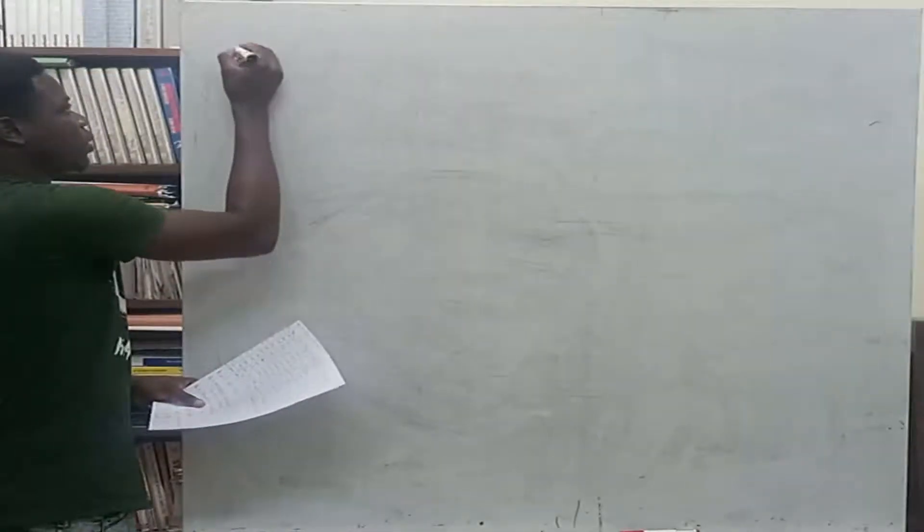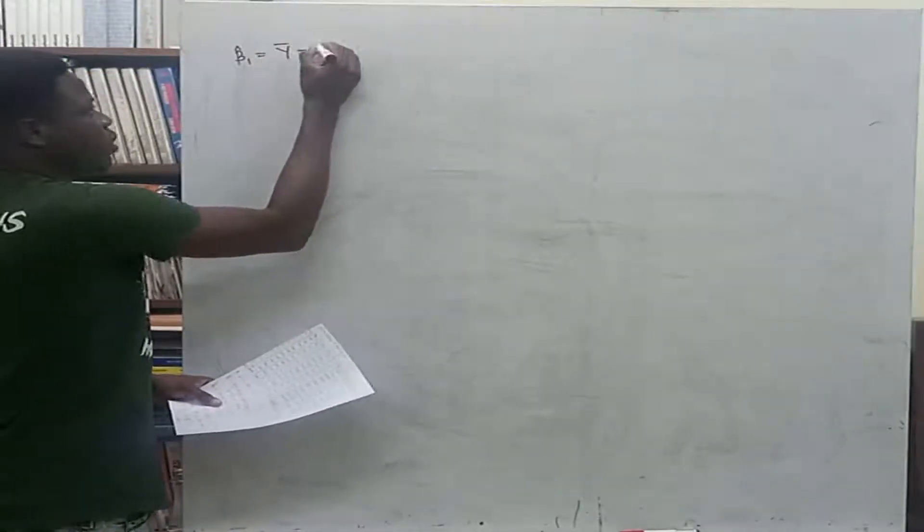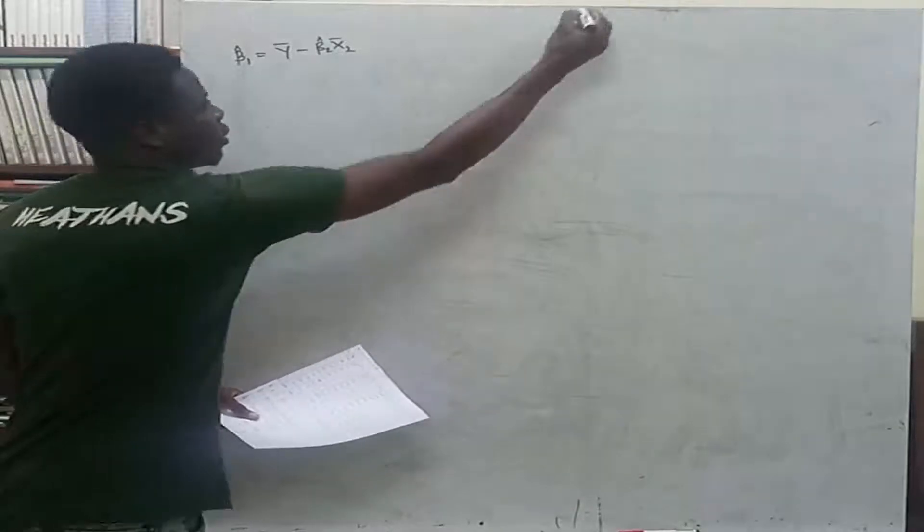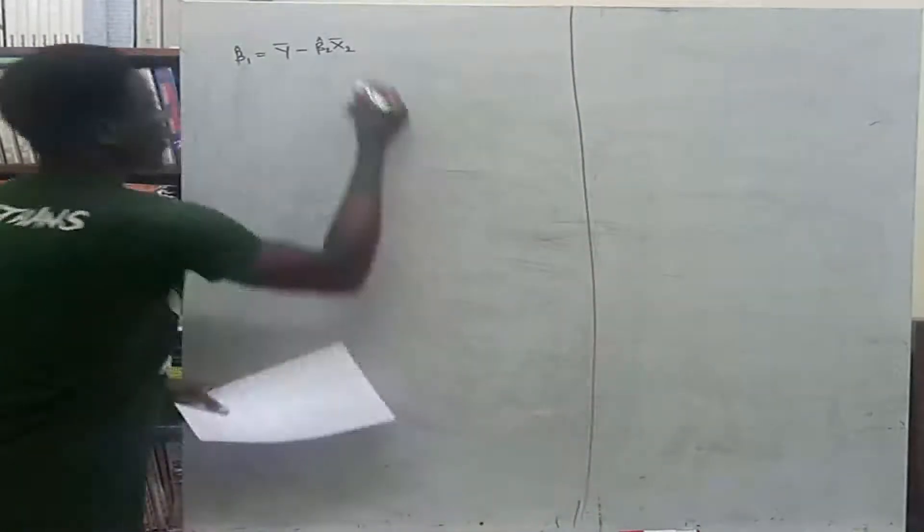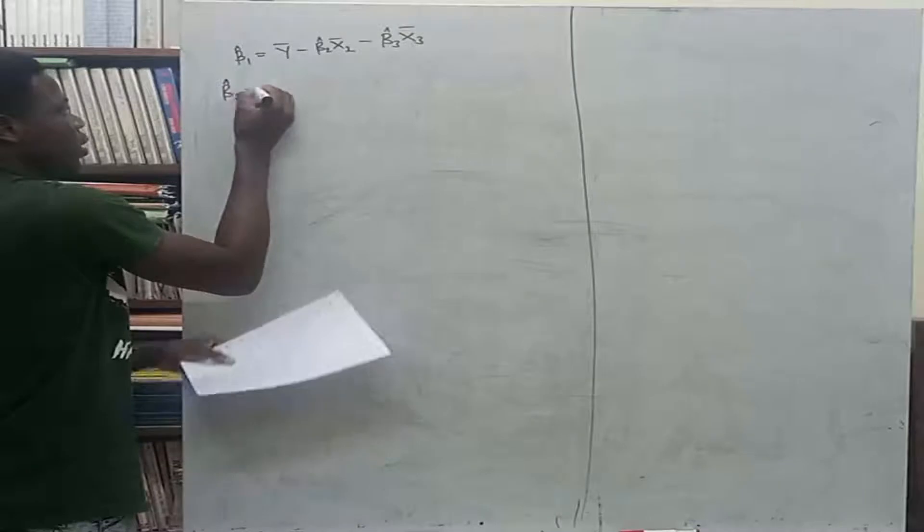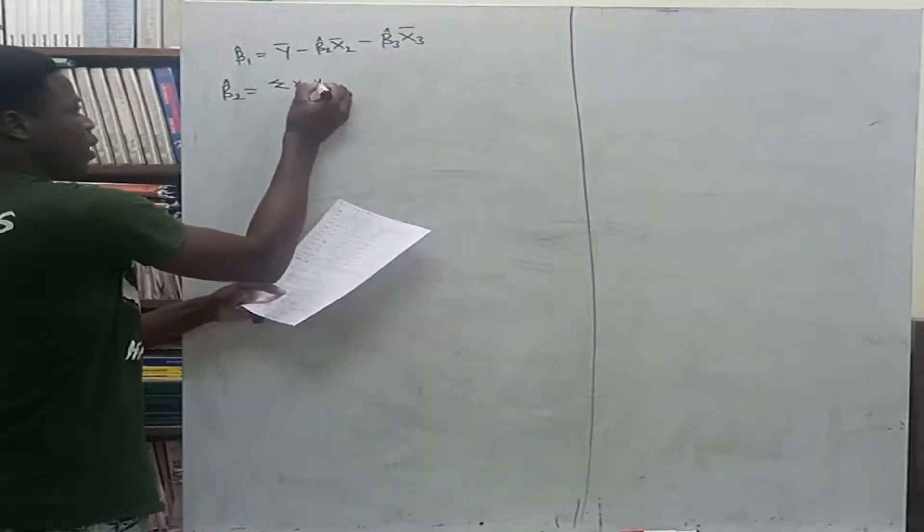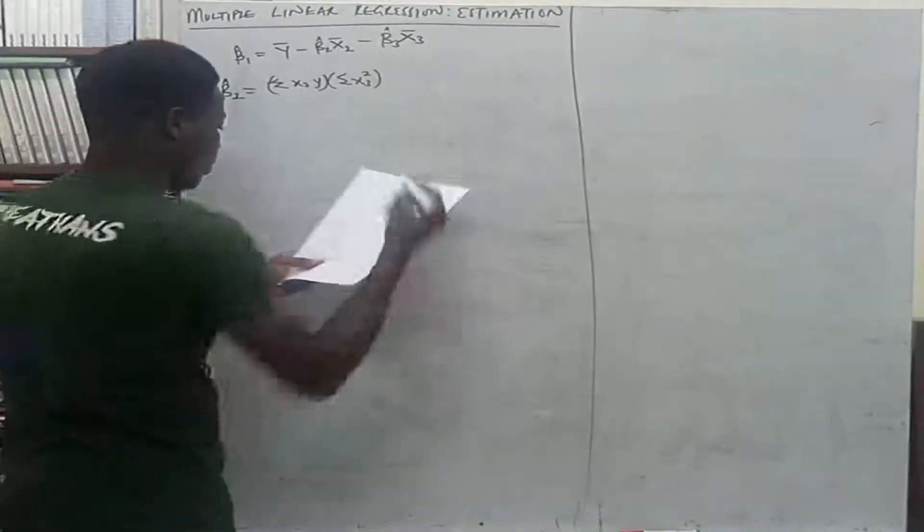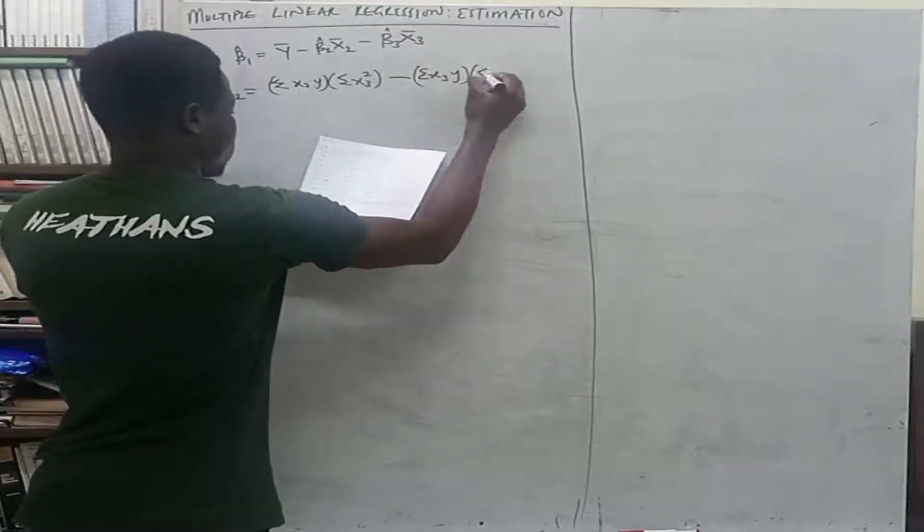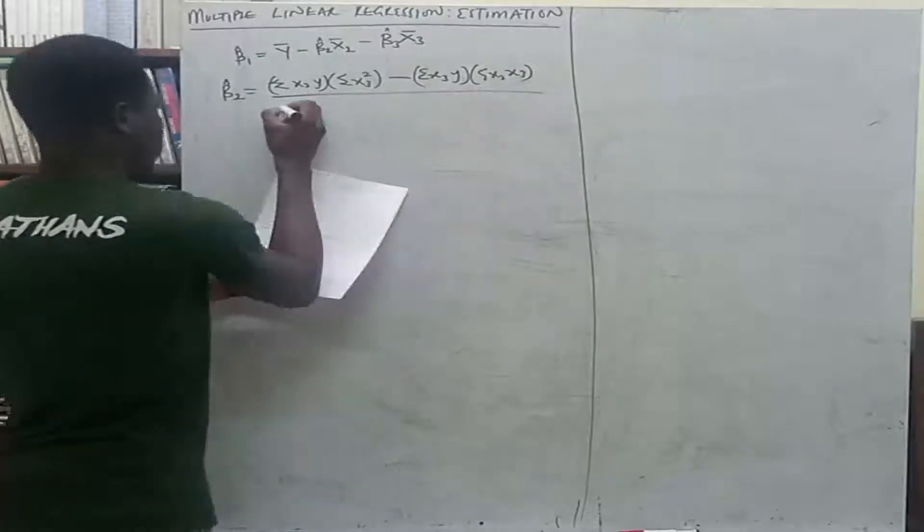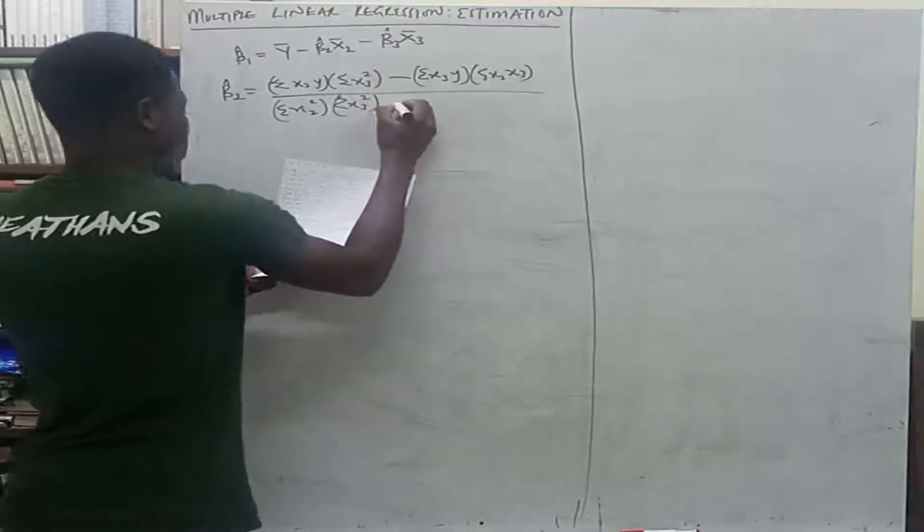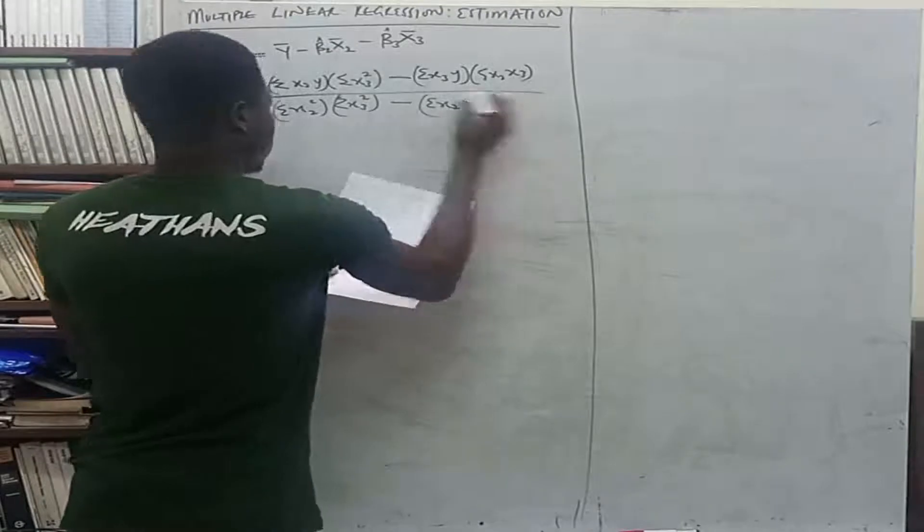So we established that beta1 equals y bar minus beta2 times x2 bar minus beta3 times x3 bar. Beta2 equals summation x2y times summation x3 squared minus summation x3y times summation x2x3, all over summation x2 squared times summation x3 squared minus summation x2x3 all squared.